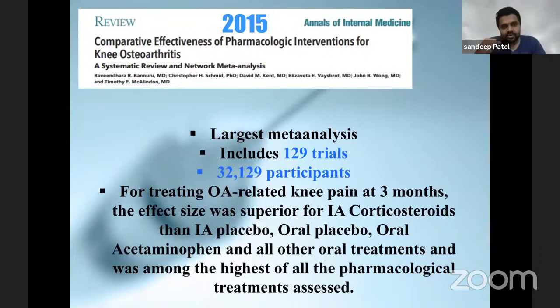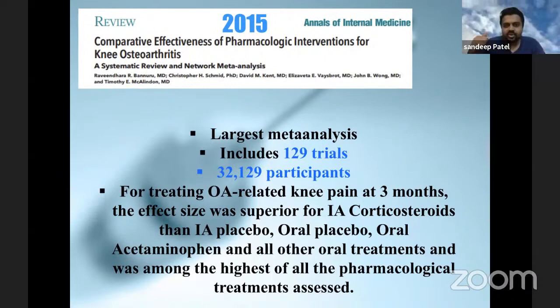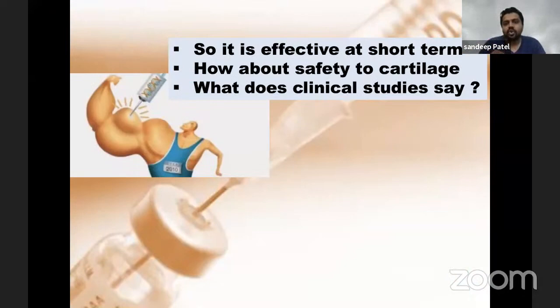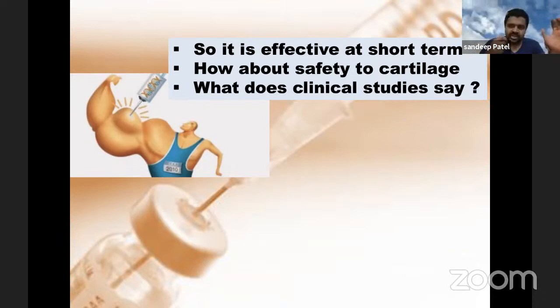Ravindra Bannuru's systematic review and meta-analysis, which forms the basis for the OARSI guidelines, is the largest meta-analysis ever on osteoarthritis - 129 trials, 32,000 participants. They said corticosteroids were good for knee-related pain till three months compared to placebo or other oral pharmacological agents. So we know it is effective in the short term, but how about safety to the cartilage? The animal studies raised concerns - what do clinical studies say? Do we have a study wherein we actually injected knees in humans, followed them with MRI, and shown something bad happens?